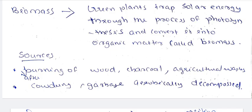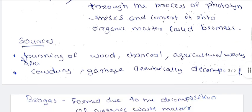Sources of biomass also include cow dung, garbage, and aerobic decomposition. Biomass sources are decomposed in the open air.